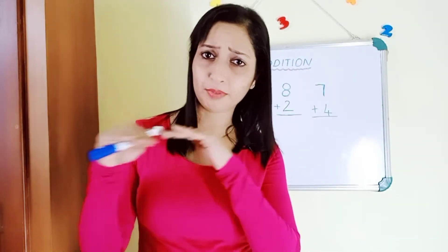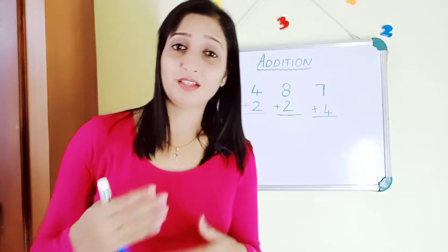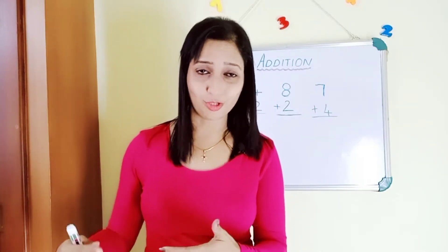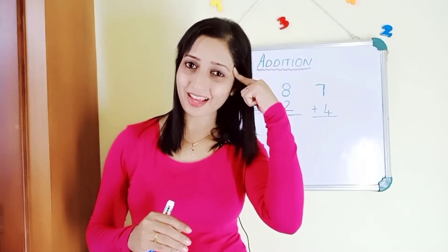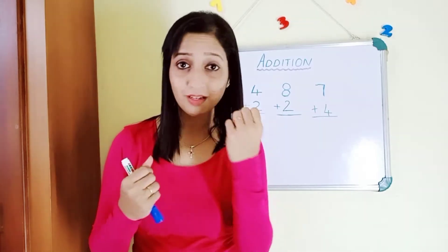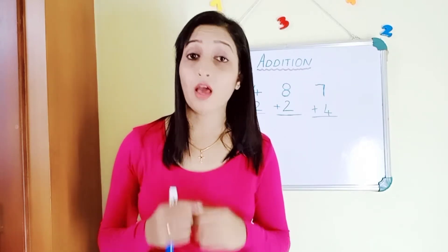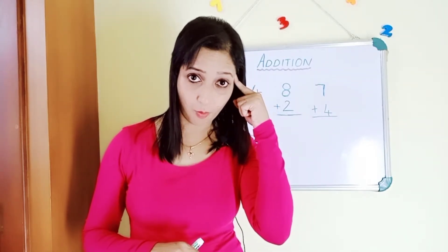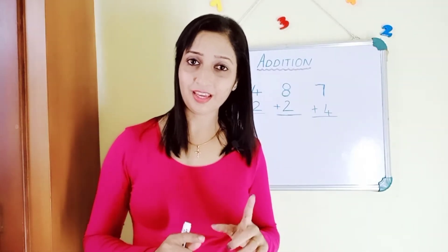We have the abacus method, number line method, and counting both numbers on your hands. All these methods require time, and you can't draw a number line each time you want to add. So we go for the easiest method — taking one number in your mind and the other number in your hand. One important thing to always remember: always take the biggest number in your mind.